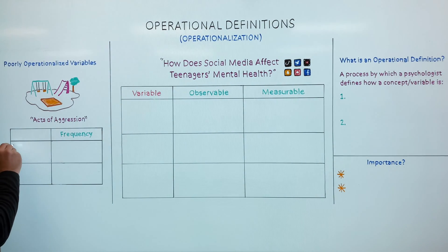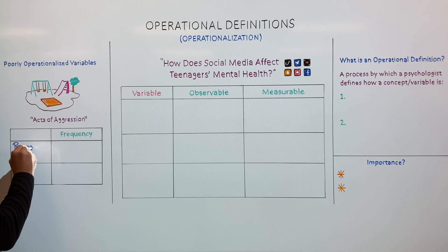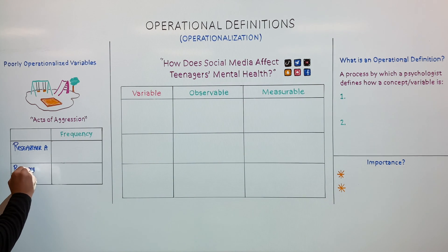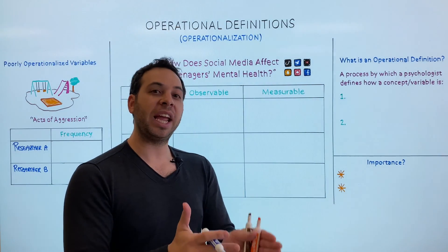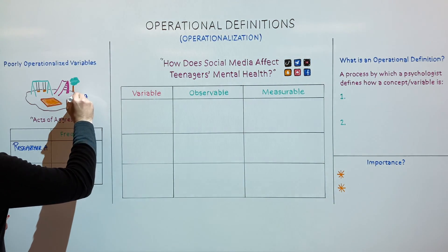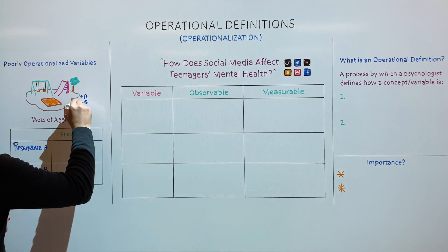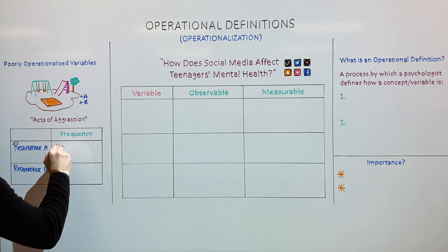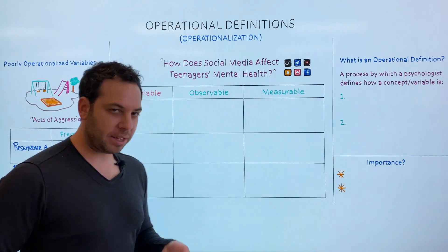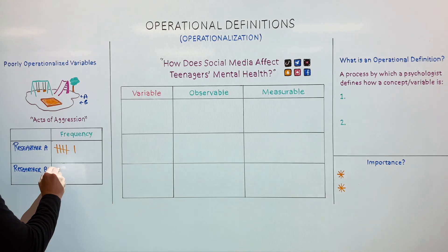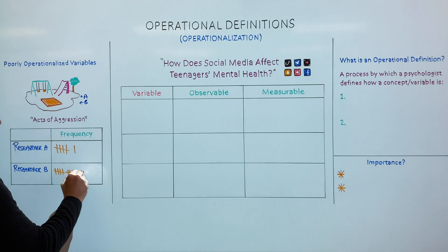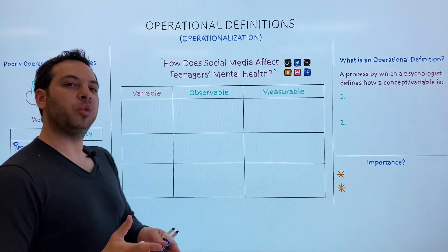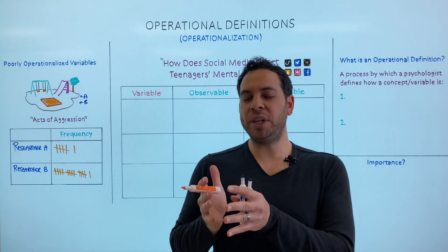We have two researchers: researcher A and researcher B. They're both set up looking at the exact same thing at the exact same time. After about an hour of watching kids play, here are their findings. Researcher A documented six acts of aggression. Researcher B documented 16. So we have two researchers looking at the exact same thing but coming away with different results.